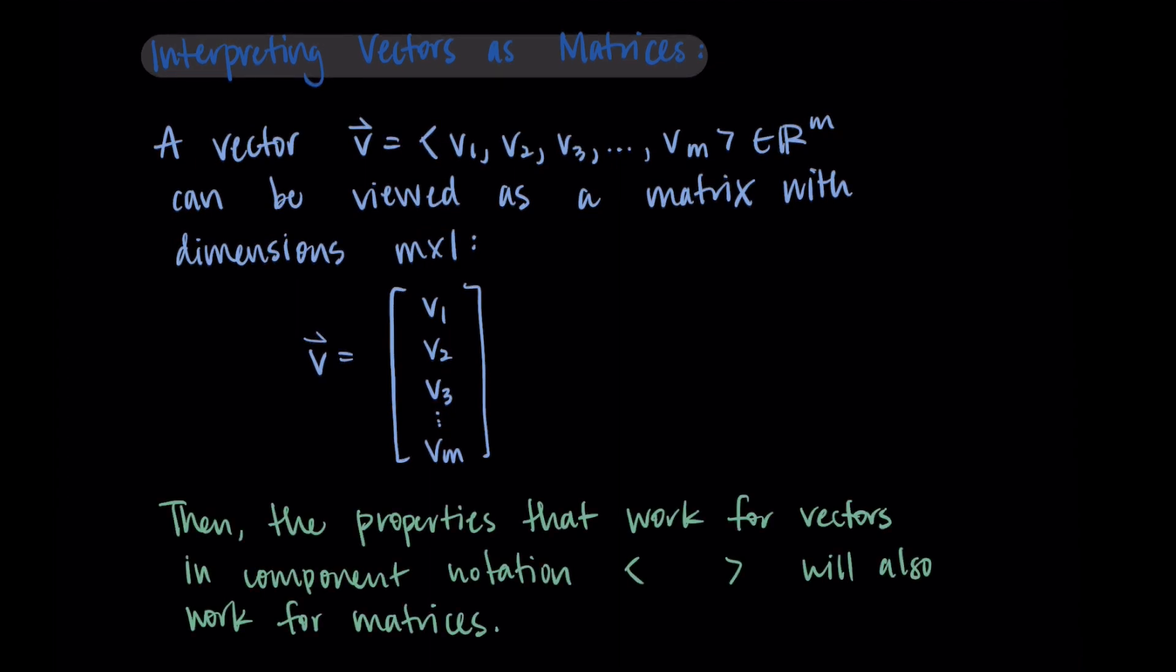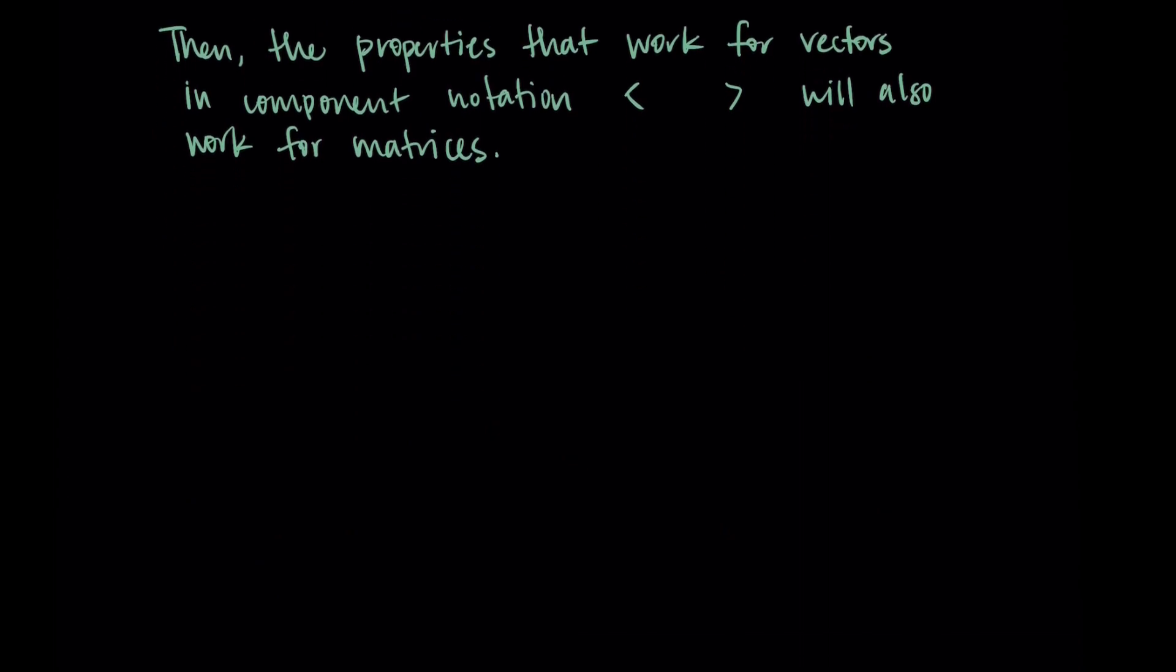Then everything we're used to with vectors will also work when they're written in matrix form. And doing this is actually kind of our basis for how we define a lot of matrix operations. We're just going to look at them now with vectors, but this will come back when we start to do more things with bigger matrices.